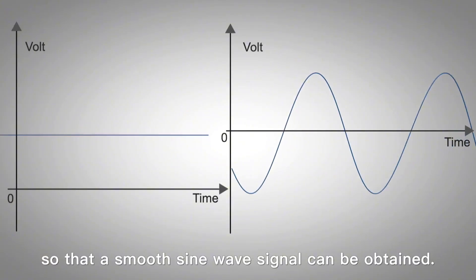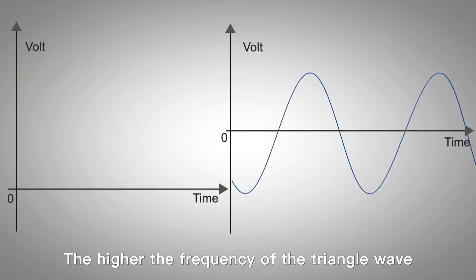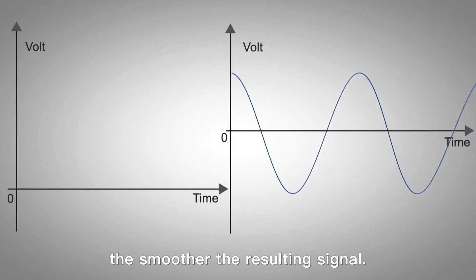In this way, a smooth sine wave signal can be obtained. The higher the frequency of the triangular wave, the smoother the signal obtained. Hope you understand this.